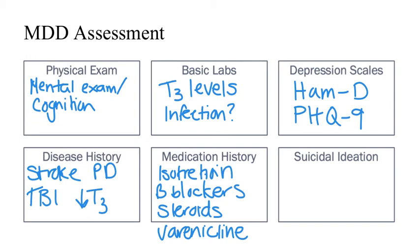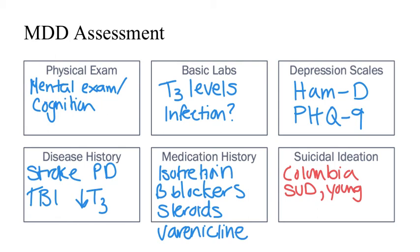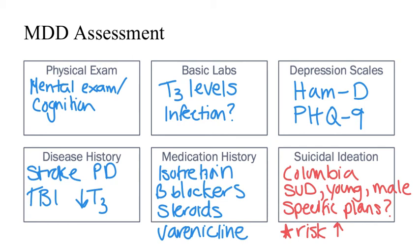It is important to evaluate the risk of suicidal ideation, as approximately 10–15% of depressed patients do complete suicide. The most common assessment tool is the Columbia Suicide Severity Rating Scale. Factors associated with increased suicide risk include the presence of other psychiatric disease like anxiety or psychosis, coexisting substance use disorder, younger age, physical illness, recent stressful events, childhood trauma, and male gender. Patients with specific, violent, and irreversible plans are considered to have suicidal intent. Notably, the risk of suicide actually increases during initial treatment with an antidepressant, which will be discussed further when antidepressants are introduced.